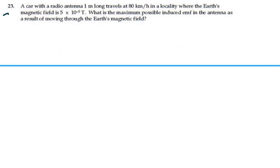Here's problem 3123. A car with a radio antenna 1 meter long travels at 80 kilometers per hour in a locality where the Earth's magnetic field is 5 times 10 to the minus 5 Tesla. What is the maximum possible induced EMF in the antenna as a result of moving through the Earth's magnetic field?